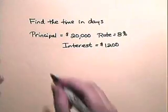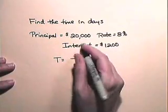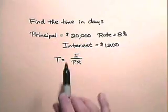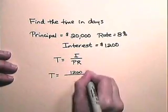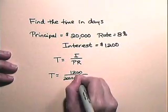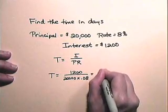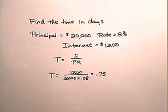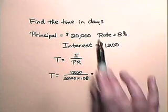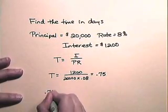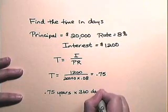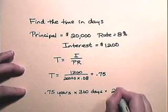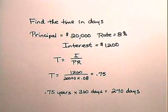Now let's look at two problems in which we find the time. Here we'll find the time in days. Time equals interest divided by principle times rate. If the principle is $20,000, the rate is 8%, and the interest is $1,200, the time will be 1,200 divided by 20,000 times 0.08, which is 0.75, or three-fourths of a year. We're using ordinary interest, so three-fourths times 360 days equals 270 days.